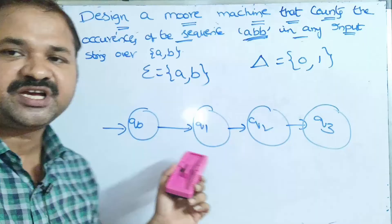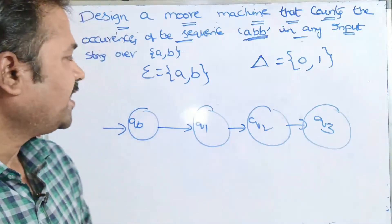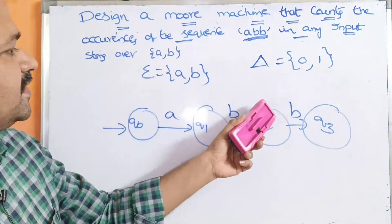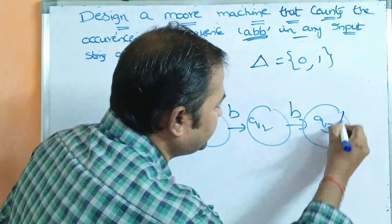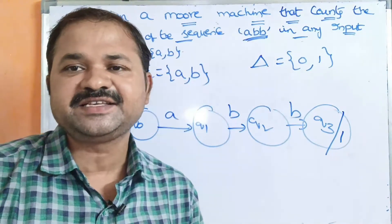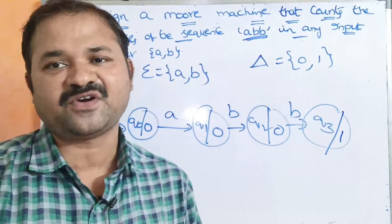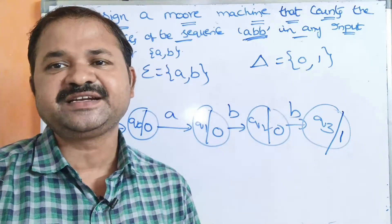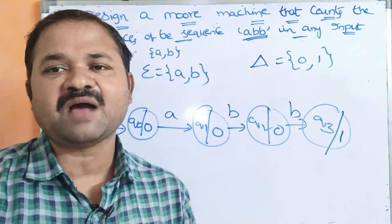In a Moore machine we have only a starting state; we don't have any final state. The sequence is ABB. If the sequence is ABB then we display the output as 1, whereas if the sequence is not ABB then we display the output as 0. In a DFA, each state must use all the symbols present in the alphabet.